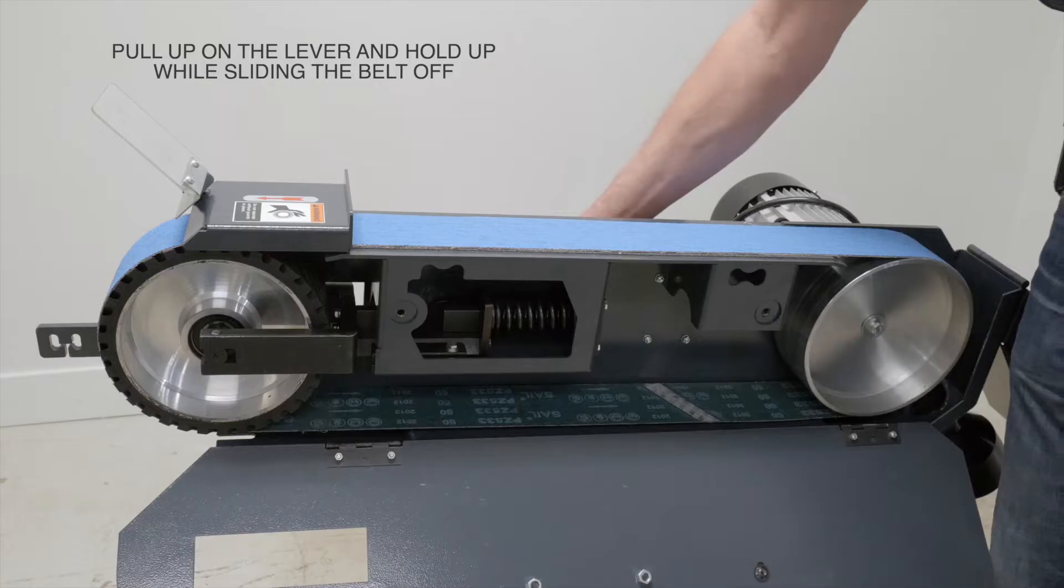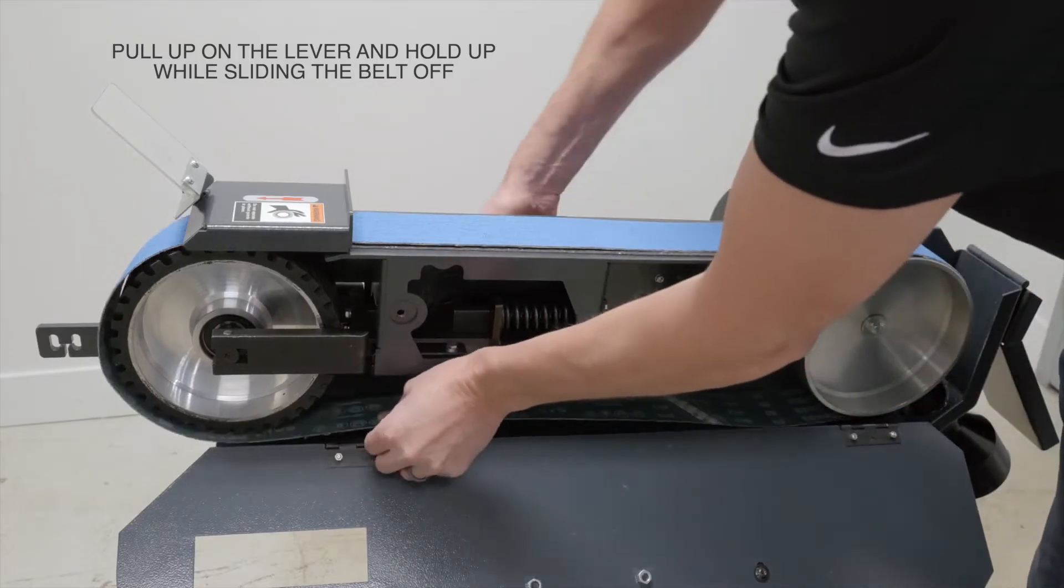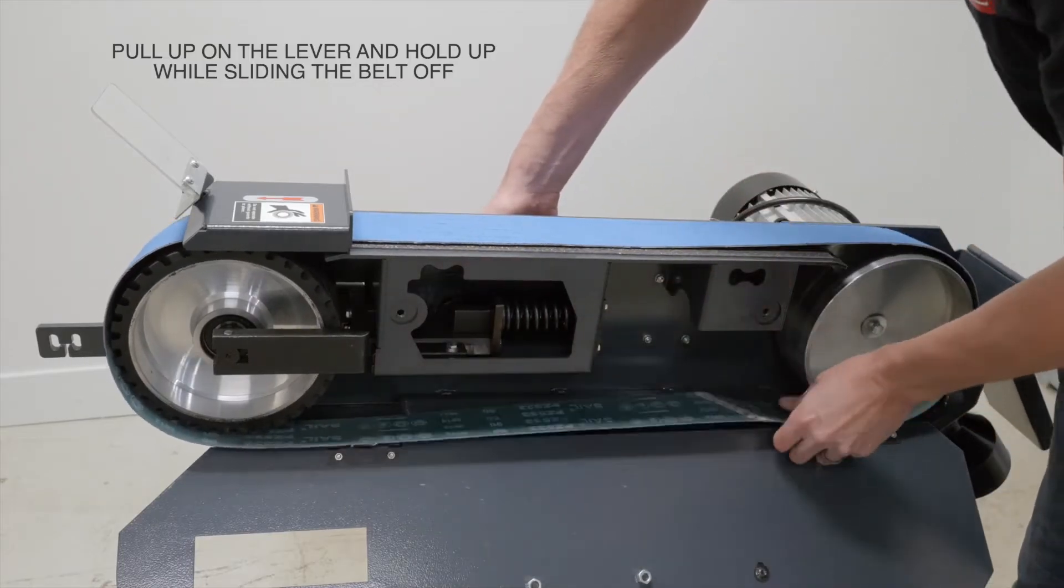To remove the belt, we'll pull up on the lever and hold it up while sliding the belt off.